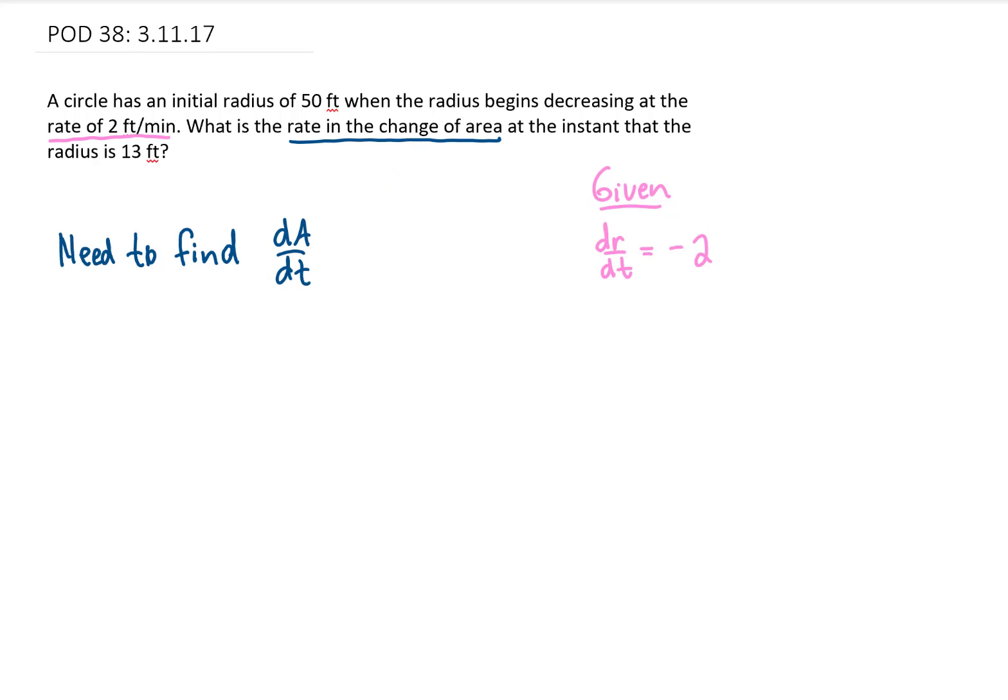We call this a related rates problem because we need to find a relationship between this rate and this rate. Once we know the rate that we have and the rate that we need to find, in every related rates problem we need to find a relationship between the variables. In this case we need to relate A and r. Well since we're talking about a circle, we know that the area of a circle is given by the formula A = πr².